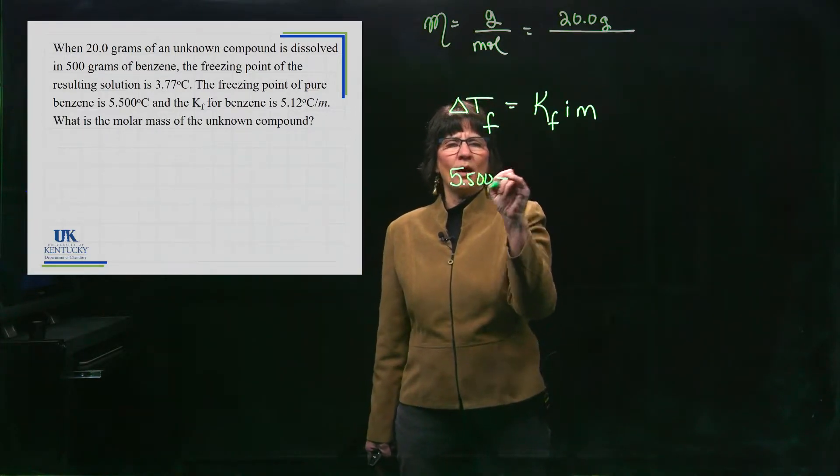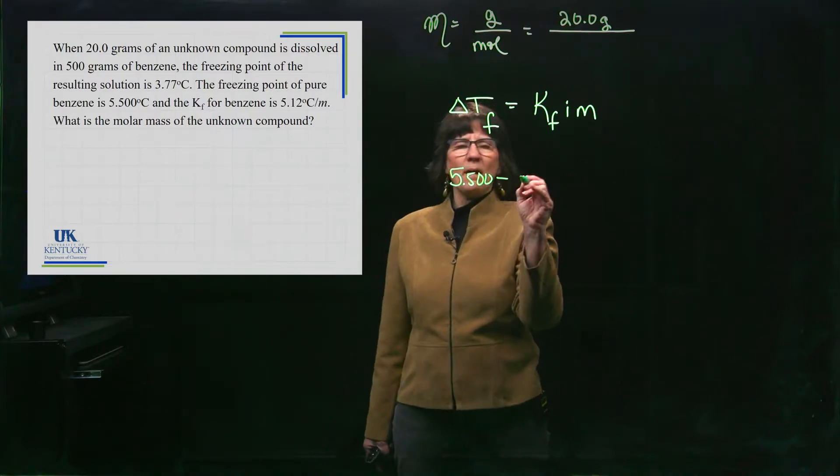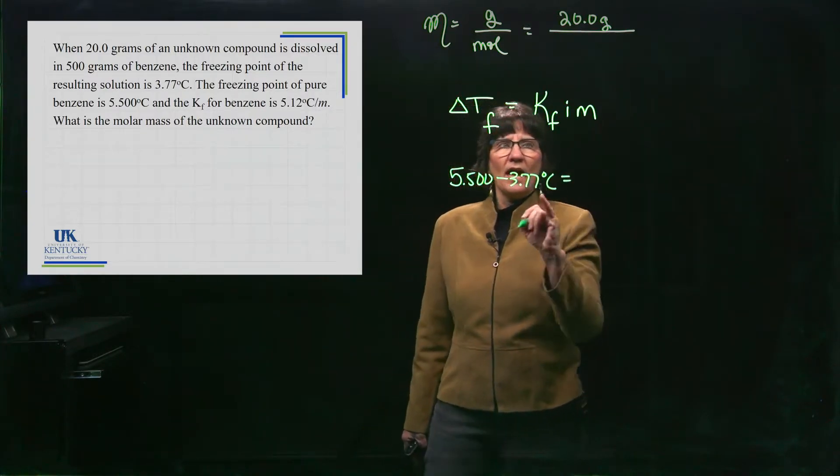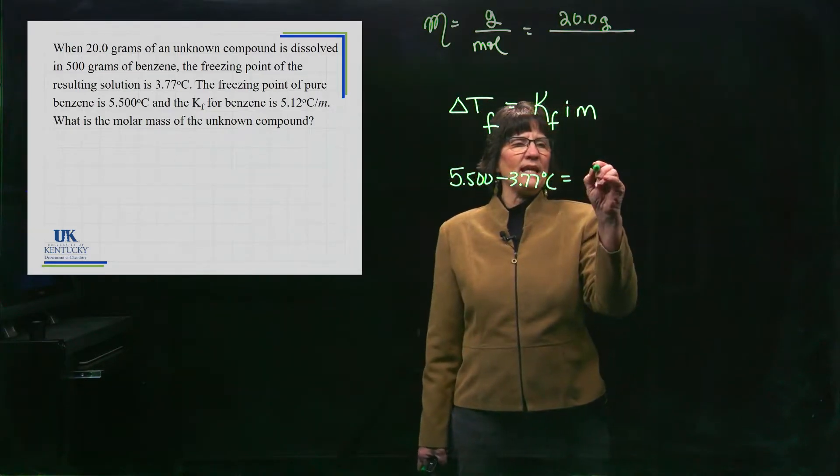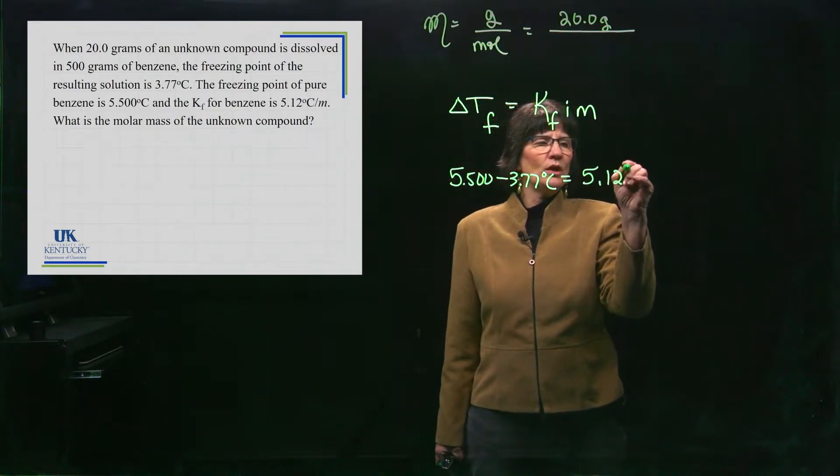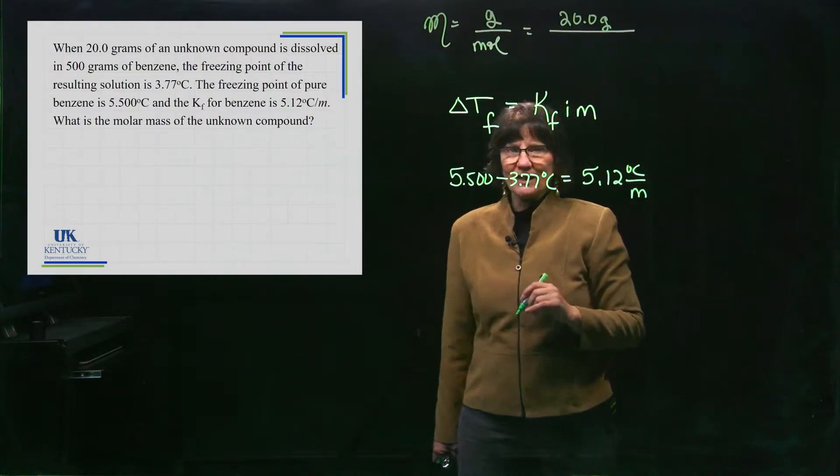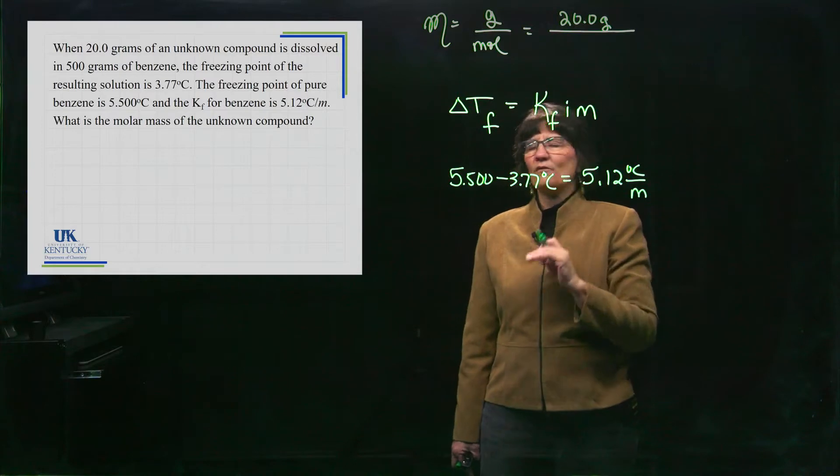So I'll take the big minus the small. The K sub F is given to me for benzene is 5.12 degrees Celsius per molal. That lets me know that I can work in Celsius. So I've got that.